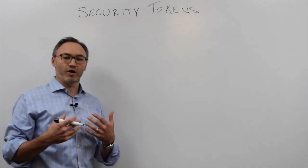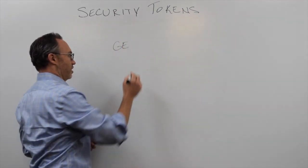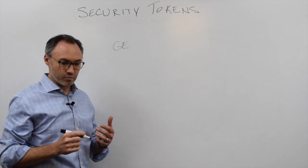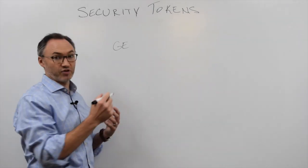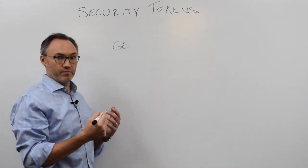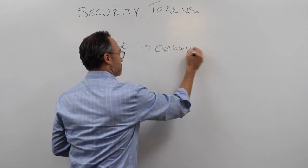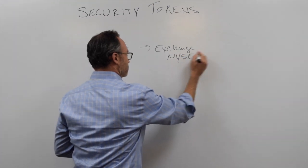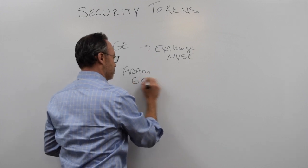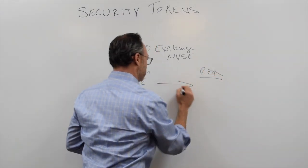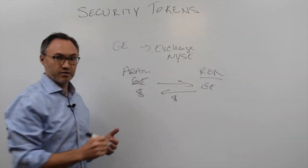And we'll talk about why we might want to do that. First, we'll talk about a security. If I own shares of GE stock, General Electric stock, it's denoted with GE and with a transfer agent that I'm the owner of that stock. I can go to an exchange, like the New York Stock Exchange, and I can sell it. So Adam owns GE. Ron wants to buy it. I sell it to him. He gives me money. And Ron now owns the GE stock, and I now have the money. Very simple.